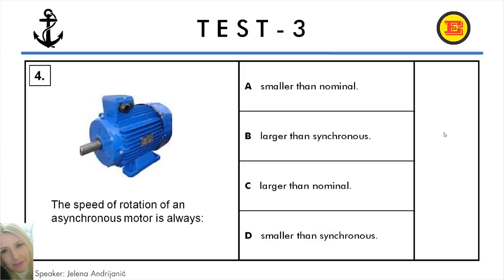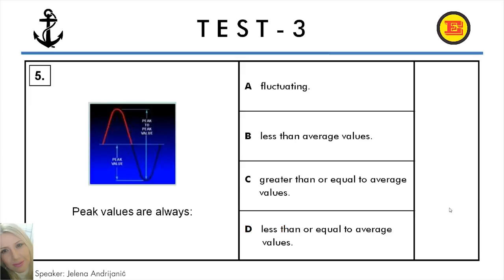Question number 4. The speed of rotation of an asynchronous motor is always: A: Smaller than nominal, B: Larger than synchronous, C: Larger than nominal, D: Smaller than synchronous. And the correct answer is D: Smaller than synchronous.